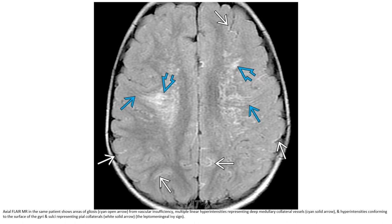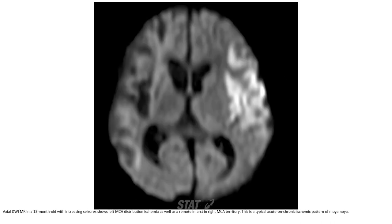Hyperintensity conforming to the surface of the sulci and subarachnoid space represents pial collaterals — the leptomeningeal ivy sign. DWI in a 13-month-old with increased signal in the left MCA distribution demonstrates ischemia, as well as remote infarct in the right MCA territory. This is the typical acute-on-chronic ischemia pattern of Moyamoya.